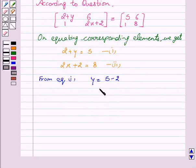And from second equation, we have 2x equal to 8-2, x equal to 6/2, that is x equal to 3.